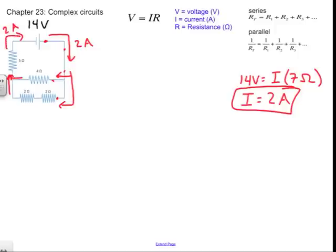On both sides of the parallel section, 2 amps flow. Within the parallel section, we combined two 4-ohm branches. By symmetry we can reason that 1 amp goes through each branch, but when the numbers aren't as clean, we need a more systematic approach using voltages.